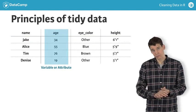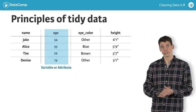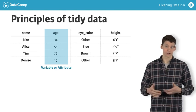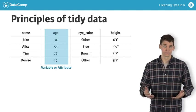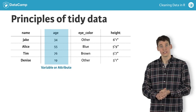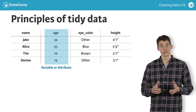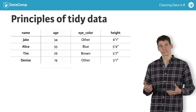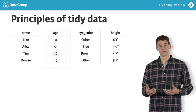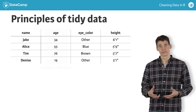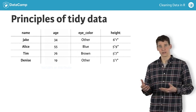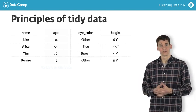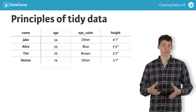Looking down the second column we see the distribution of ages among our four subjects. This column is called a variable or attribute, and each individual age is considered a value of the age variable. If we were to give this table a name we might call it something like "people," since each observation describes characteristics of a single person, also known as an observational unit.